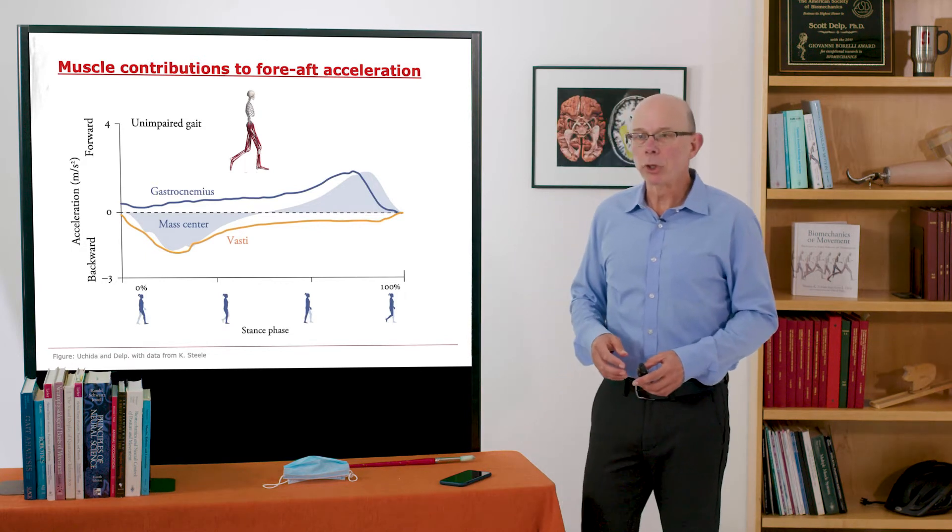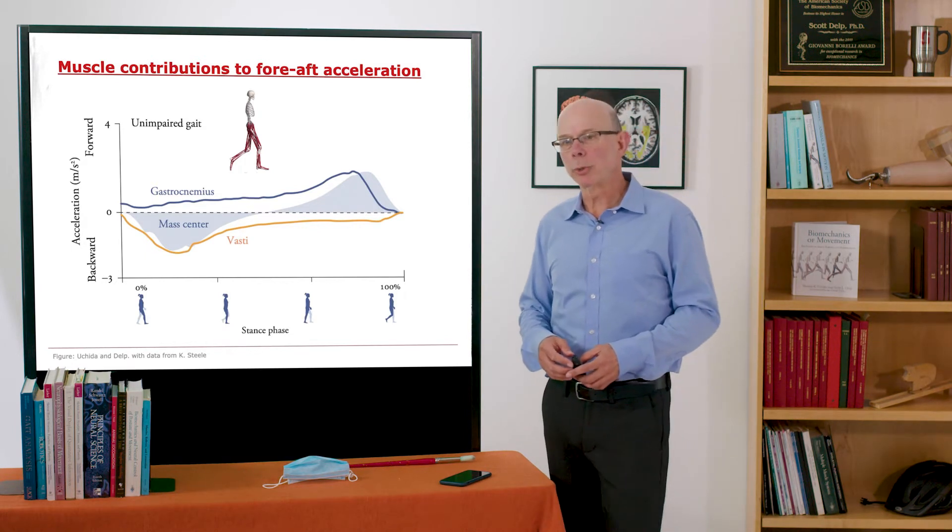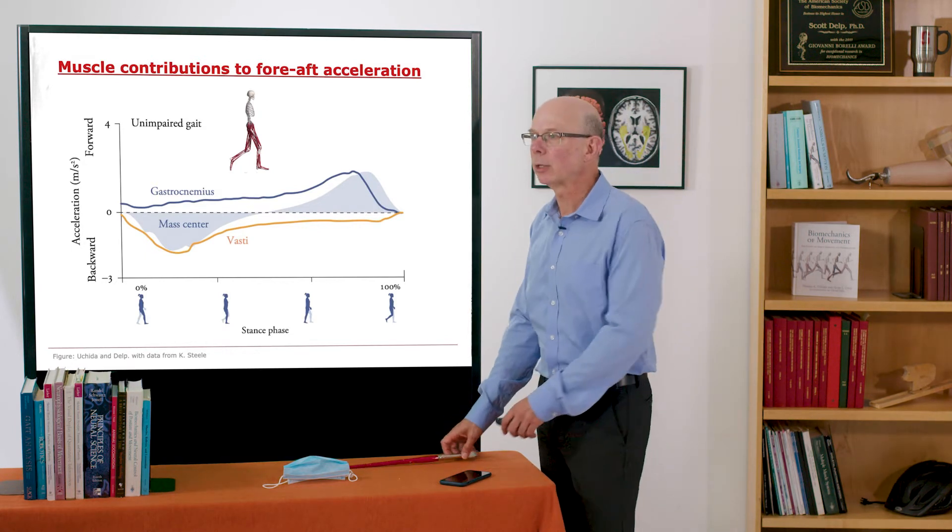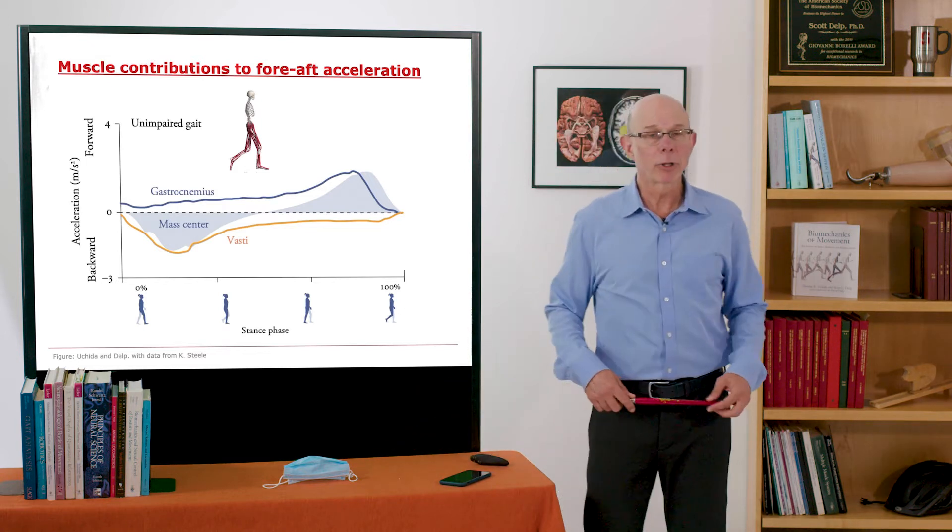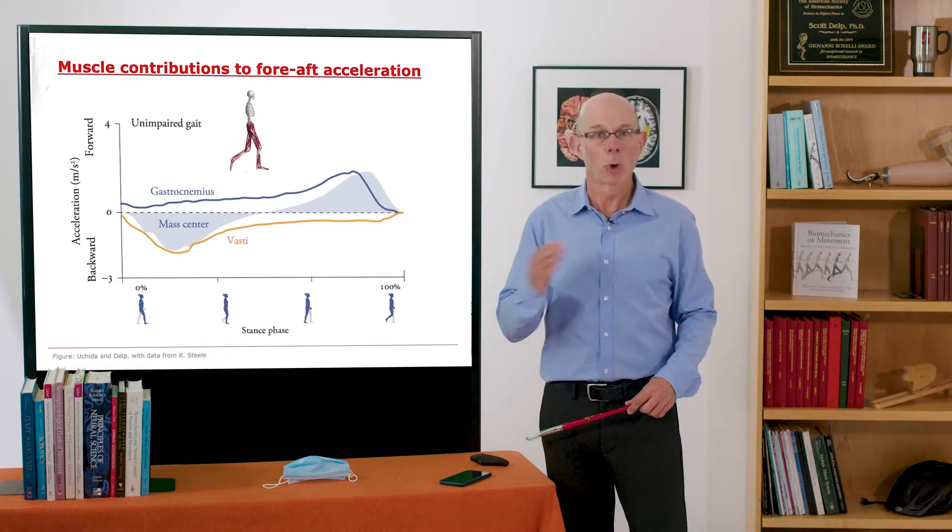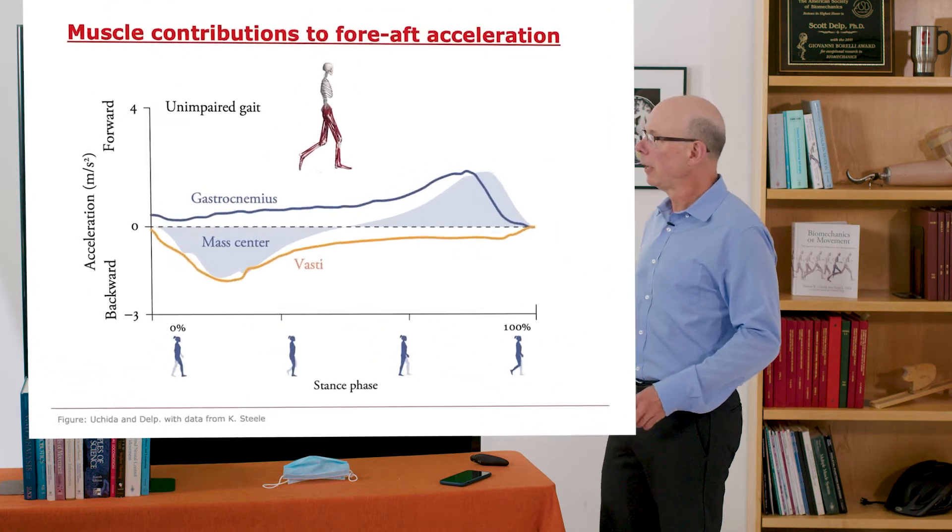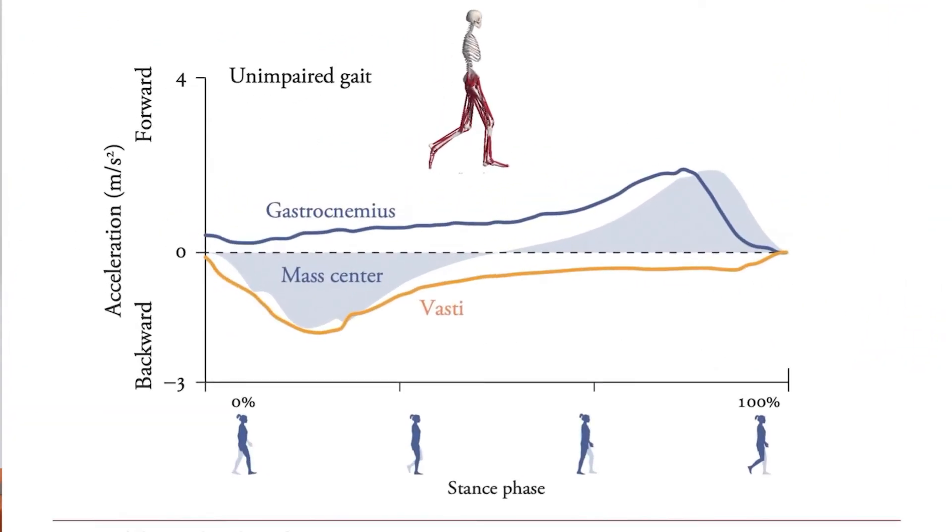For example, you can analyze muscle contributions to fore-aft acceleration. So remember the ground reaction forces, the fore-aft ground reaction forces, that's what's shown here in the shaded area. So we have a backward directed ground reaction force and then about mid stance phase it shifts to forward direction. What muscles are producing that?